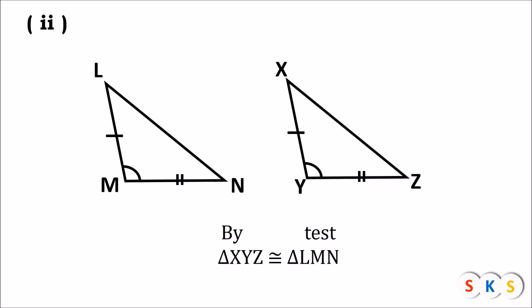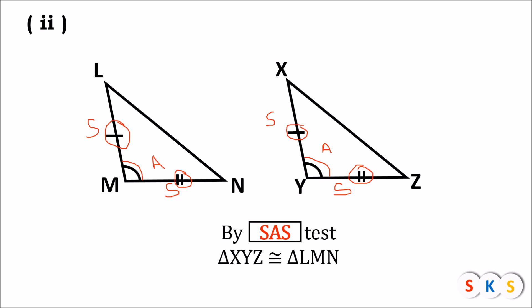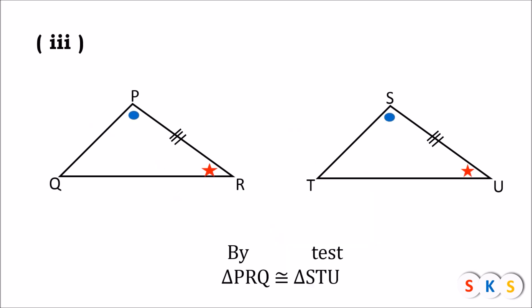In question number two, we have two triangles. Side LM and side XY got a same kind of mark, therefore side LM is congruent to side XY. Angle LMN and angle XYZ got a same kind of mark, therefore angle LMN is congruent to angle XYZ. Side MN and side YZ got a same kind of mark, therefore side MN is congruent to side YZ. Therefore these two triangles are congruent by SAS test.